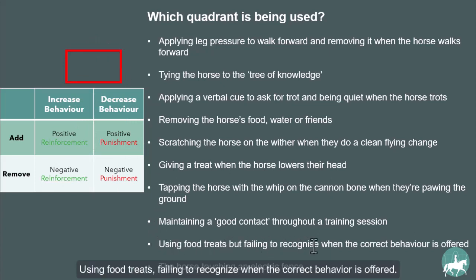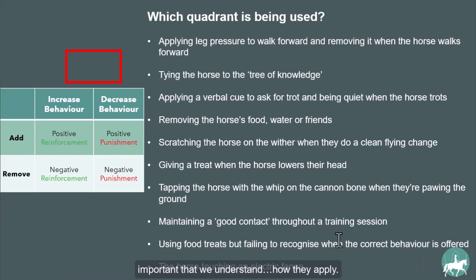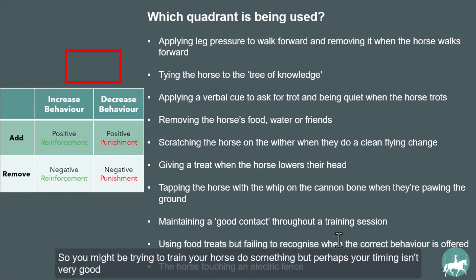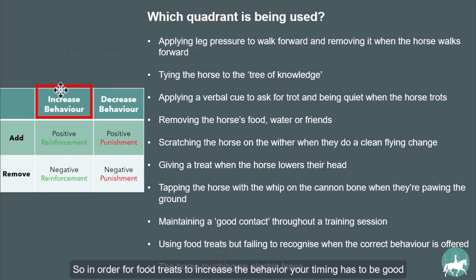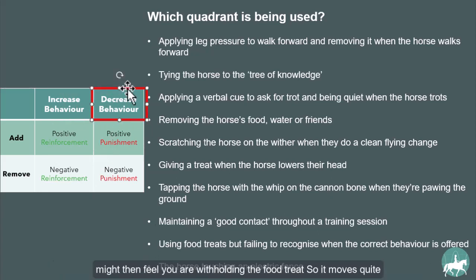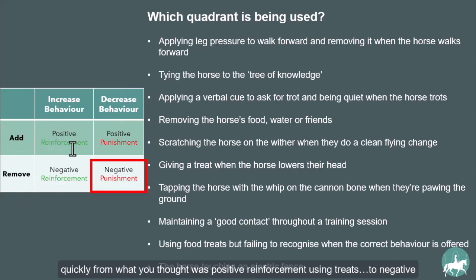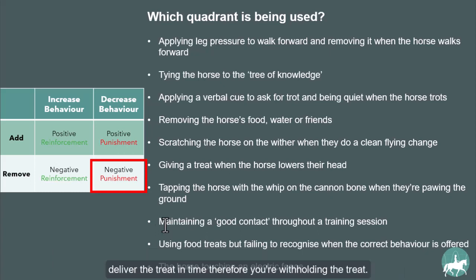Using food treats but failing to recognize when the correct behavior is offered. We don't always intend to use the quadrants we end up using, but it's important we understand how they apply. If your timing isn't good and you didn't see the horse do the correct behavior, the food treat won't increase the behavior. If your timing isn't good, it moves quite quickly from what you thought was positive reinforcement to negative punishment from the horse's perspective, because the horse feels you are withholding the food treat.